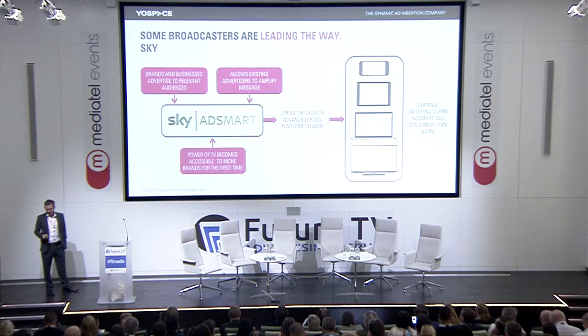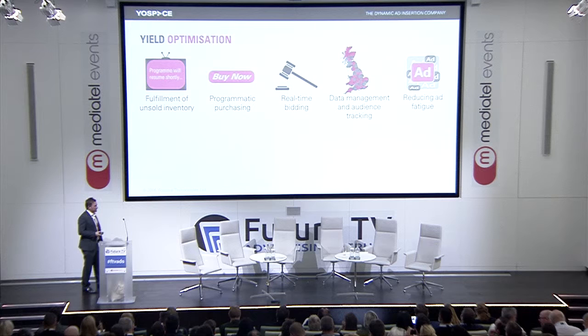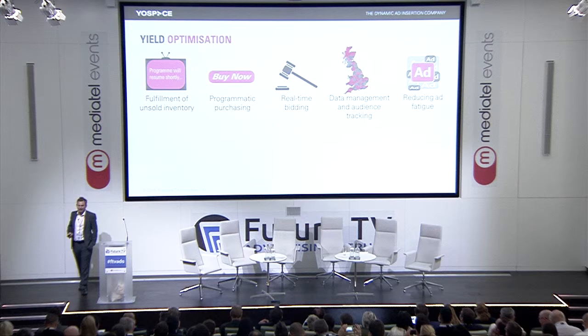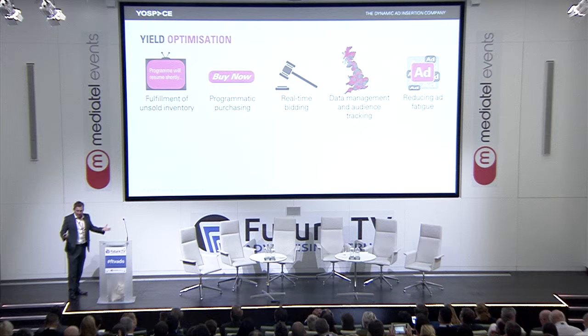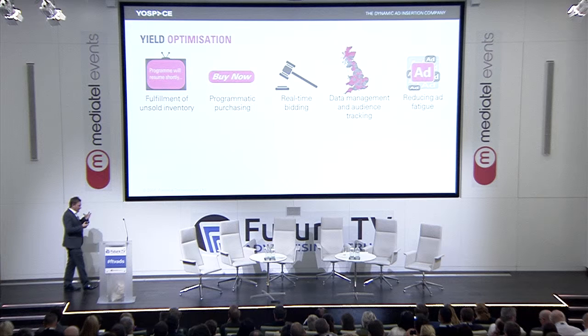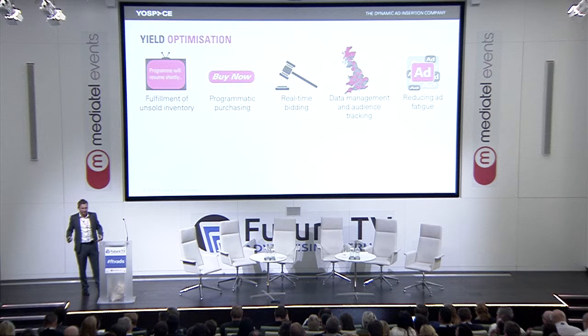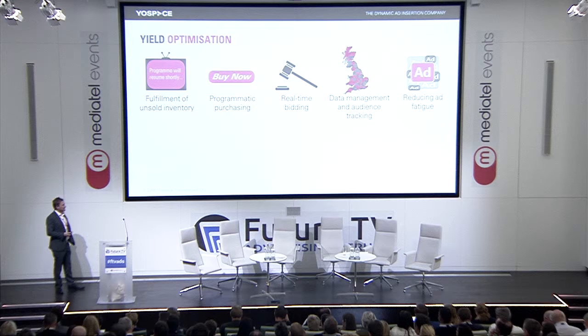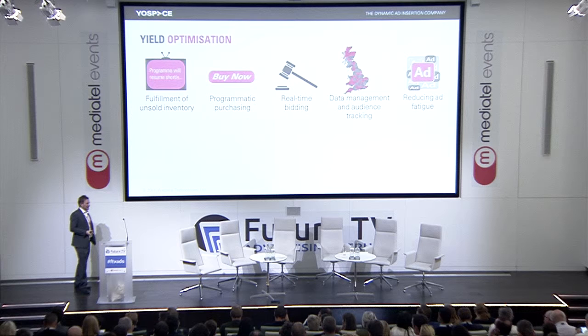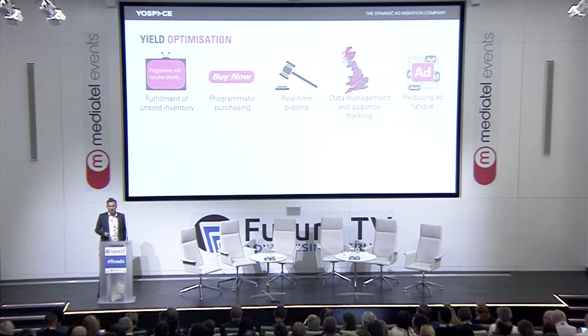So what are the tools of yield optimization? You've probably heard a lot of these things: the fulfillment of unsold inventory by using third-party networks, programmatic purchasing, real-time bidding, enhanced data management, audience tracking, re-using more ad creative because you have more slots to fill to reduce ad fatigue from individual users. Now, all of these things represent a potential problem with regard to the management of ad copy itself.